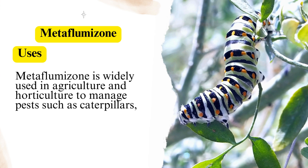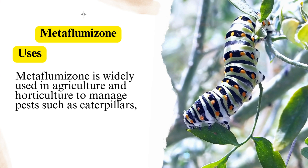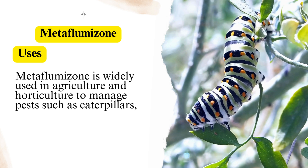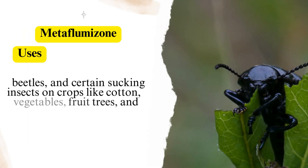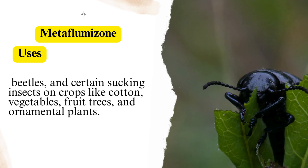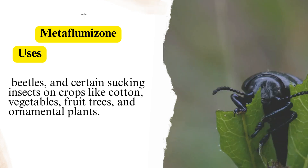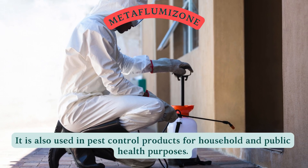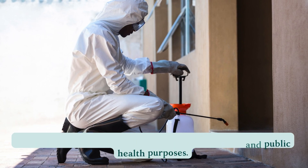Uses. Metaflumazone is widely used in agriculture and horticulture to manage pests such as caterpillars, beetles, and certain sucking insects on crops like cotton, vegetables, fruit trees, and ornamental plants. It is also used in pest control products for household and public health purposes.